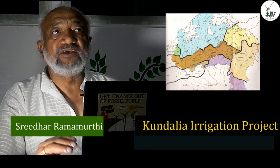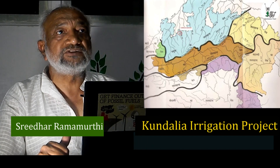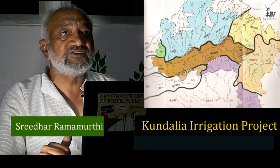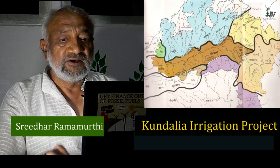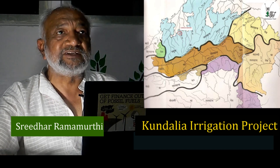At the start of this campaign, we will be talking about one project called the Kundalya Irrigation Project, which is in the Rajagana district of Madhya Pradesh.